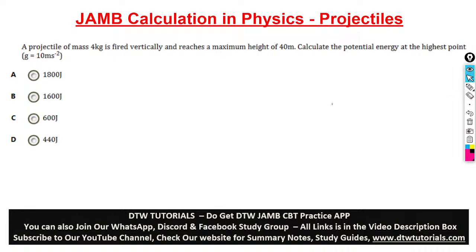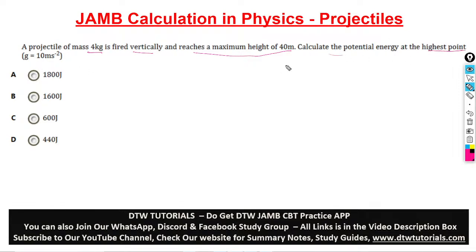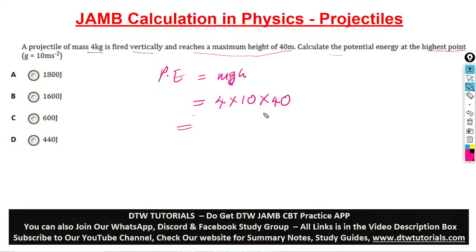The final question: a projectile of mass 4 kg is fired vertically and reaches a maximum height of 40 meters. Calculate the potential energy at the highest point. The formula is PE equals mgh. Our mass is 4 kg, g is 10, and height is 40 meters. So PE equals 4 times 10 times 40, which gives 1600 joules.